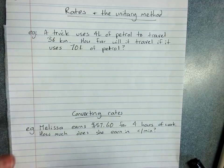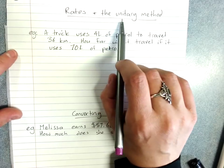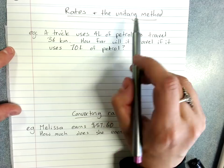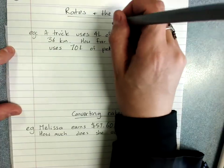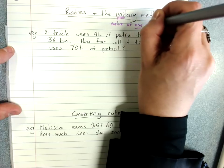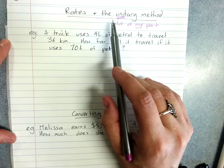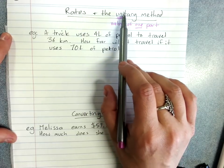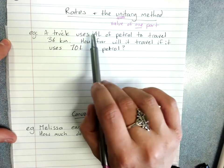Rates and the unitary method. Just before we start, we've already actually met the unitary method in percentages and in ratios. All that the unitary method is is finding the value of one part. And using that to solve problems. So when we found one percent in percentages or in ratios when we find the value of one part, that's the unitary method.